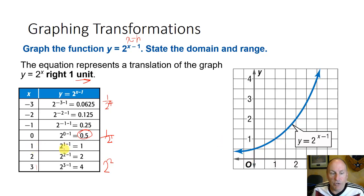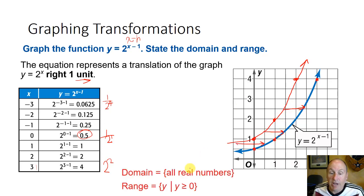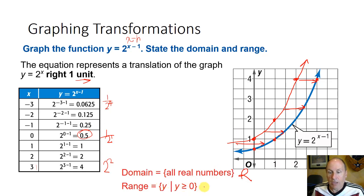At x = 1, we get 2^(1-1) = 2^0 = 1, so everything shifts to the right by one unit. The parent function goes through (0, 1), (1, 2), (2, 4), and the whole graph is shifted right by 1. The domain is still all real numbers. The range is the same as the original parent function — shifting right does not change the range at all. It still approaches a minimum of y = 0.